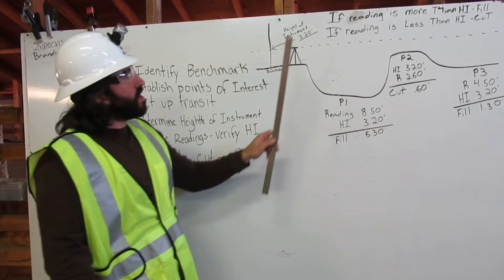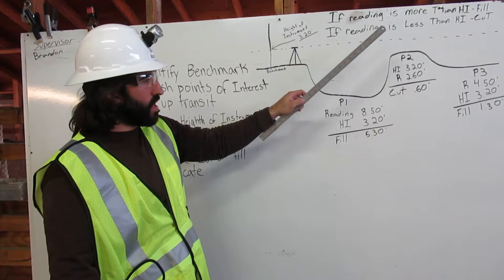Next, we are going to calculate cut or fill. The rule is, if reading is more than height of instrument, we fill. If reading is less than height of instrument, we cut.